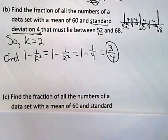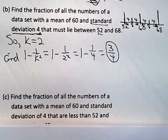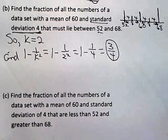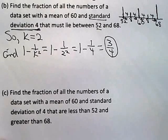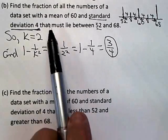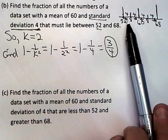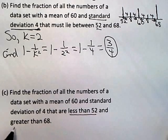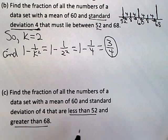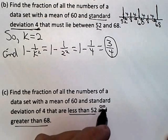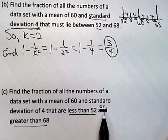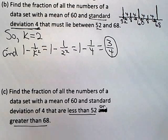Part C says: find the fraction of all the numbers of a data set with a mean of 60 and a standard deviation of 4 that are less than 52 or greater than 68. Note: the problem as written said 'and' but that should be 'or' — you can't be both less than 52 and greater than 68 simultaneously, so that's a typo.